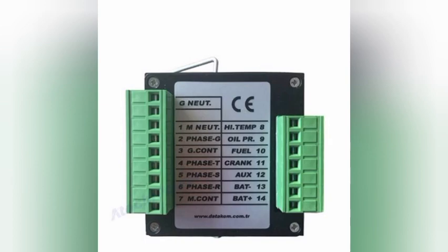Terminal seven is M contactor — that is your main contactor normally-open and normally-close connection wires, which you connect here. After that, on the right side, is the high temperature sensor wiring. Terminal nine is for oil pressure. Terminal ten is the fuel relay output. Terminal eleven is the crank output — the starter motor relay output. Terminal twelve is auxiliary, which you can use for any purpose.